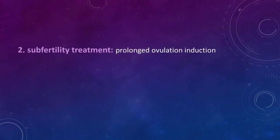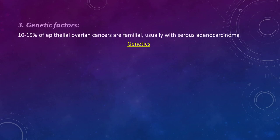The second risk factor is infertility treatment, especially when used for prolonged time with prolonged ovulation induction. The third is genetic factors: 10 to 15% of epithelial ovarian cancers are familial and hereditary, usually with serous adenocarcinoma. The most common gene mutations are BRCA1 and BRCA2. BRCA1 occurs in 18% and BRCA2 in 20%, so BRCA1 is most common. When there is a mutation, the woman is liable to develop breast and ovarian cancer, and this is autosomal dominant hereditary.